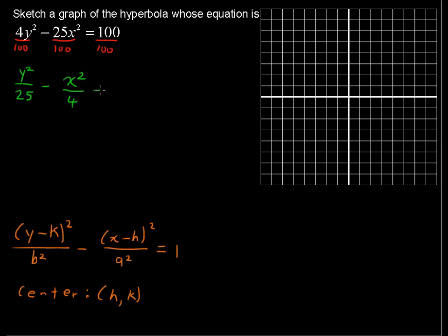Now just to drive this home, I'm going to write this in the standard form: y minus 0 quantity squared over 5 squared minus x minus 0 quantity squared over 2 squared equals 1. So now we've got this in exactly the same form where we can pick off the b and the a and the h and the k.